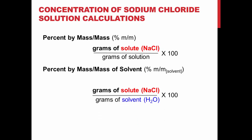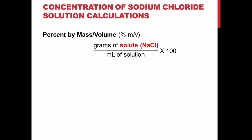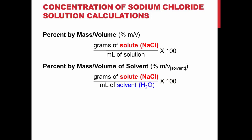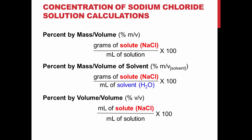You can determine percent mass by mass by dividing the mass of the solute, sodium chloride, by the mass of the solution and multiplying by 100%. Percent mass of solvent is determined by dividing the mass of the solute, sodium chloride, by the mass of the solvent, water, and multiplying by 100%. Percent mass by volume is calculated by dividing mass of solute by the volume of solution in milliliters and multiplying by 100%. Percent mass by volume of solute is determined by dividing mass of solute by the volume of solute in milliliters and multiplying by 100%. Percent volume by volume is determined by dividing the volume of solute in milliliters by the volume of solution in milliliters and multiplying by 100%.